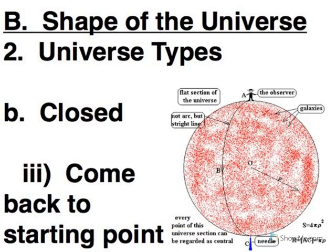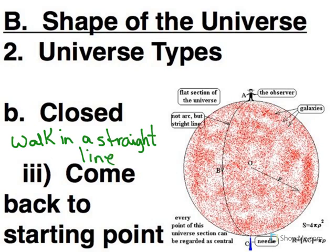Now if you were to go for a walk and you walk in a straight line in a closed universe, you will eventually come back to where you started. Our Earth is similar in that respect, that if you could go off walking around the Earth, eventually you would come back to where you began.